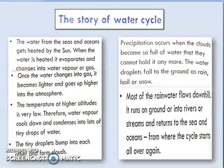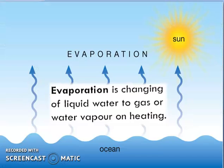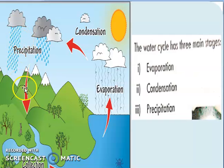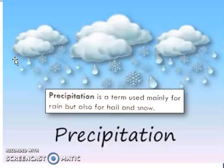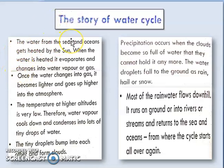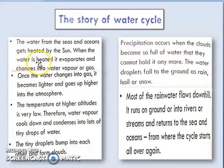Now let's discuss what the water cycle is. Looking at the picture of the water cycle — water is collected in water bodies like oceans, seas, rivers, and lakes. This collected water gets heated by the sun, and when it is heated it evaporates, changing into water vapor or gas.